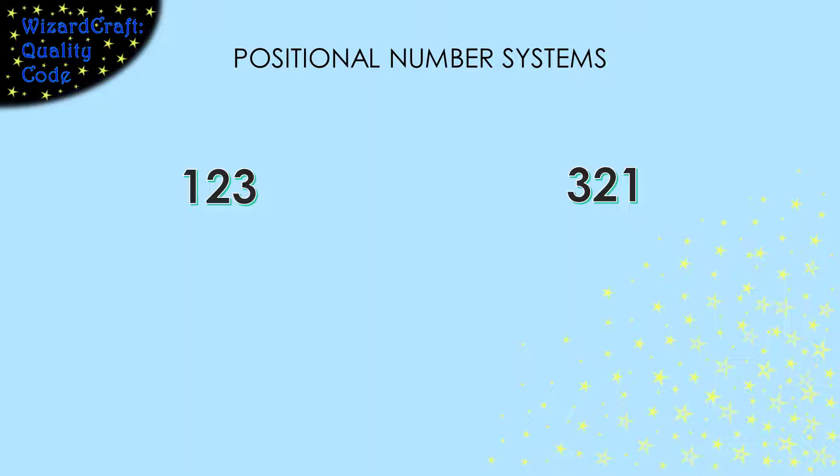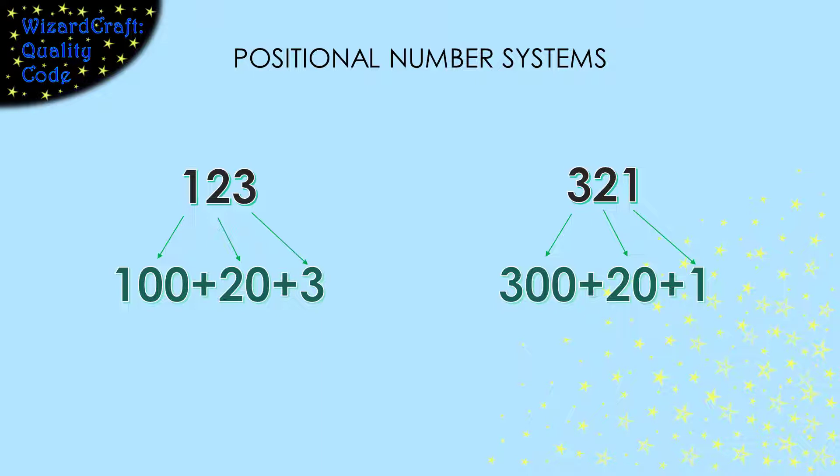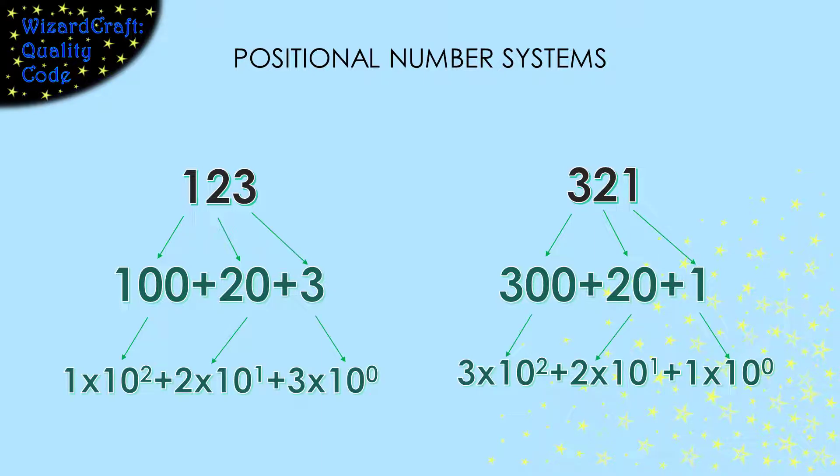In decimal, the positions of a number represent the powers of 10. That's where the dec in decimal comes from. So when we write 123, we are really saying 100 plus 20 plus 3. And 321 is 300 plus 20 plus 1. So each position multiplies the number by a power of 10. 100 is 1 times 10 squared, 20 is 2 times 10 to the first power, and 3 is 3 times 10 to the zeroth power. Because it is based on the powers of 10, decimal is also called base 10.